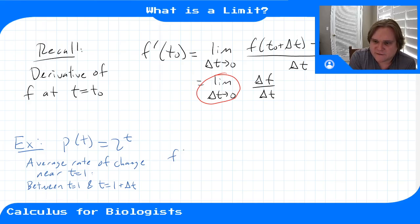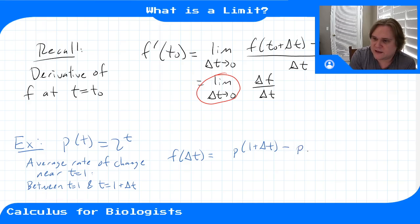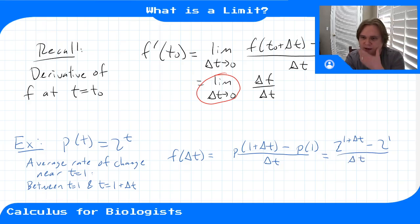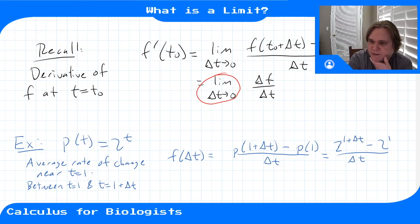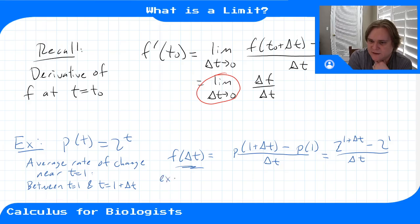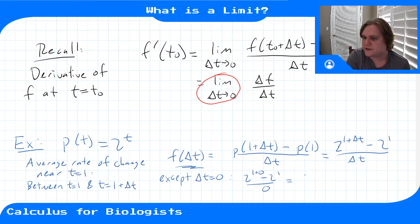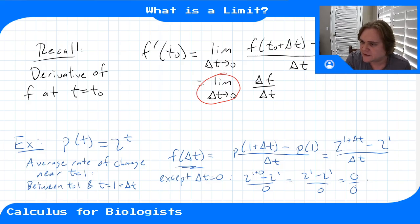We call this average rate of change f of delta t, which equals p of 1 plus delta t minus p of 1 over delta t. Plugging in our function this is 2 to the 1 plus delta t minus 2 over delta t. This function is defined for all delta t except at delta t equals zero, because plugging in zero gives us 2 minus 2 over zero, which is zero over zero — a mathematical felony, undefined.